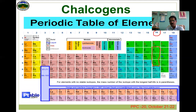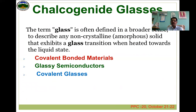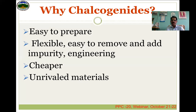Chalcogenides are the Group 16 elements of the periodic table — that is sulfur, selenium, and tellurium — they are termed as chalcogenides. Oxygen and polymers are not included. When these chalcogenides are mixed with Group 13, 14, and 15 elements of the periodic table, we get an alloy. That alloy is in amorphous form and has a significant role in today's technology. The term glass is often used in the broader sense to describe non-crystalline solids that exhibit a glass transition temperature when heated towards their liquid state.